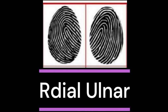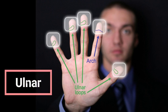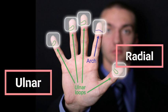A loop is further divided into two types depending upon the direction of the opening of the ridge, which can be either radial or ulnar. If the ridge is open towards the little finger, then it is called an ulnar loop. If the ridge is open towards the thumb, then they are called radial loops.